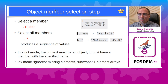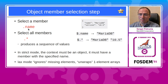The first kind of step is the object member selection step. You can select a member by its name. For example, given a JSON object, you can select .name and get the value MariaDB. You can select all members by specifying .star, and this produces a sequence of values of all members — in this case MariaDB followed by 10.5. Strict mode requires the context element to be an object, and if a member name is specified it must be present, otherwise it is an error. Lax mode ignores missing elements, unwraps one-element arrays, and tries to avoid errors.